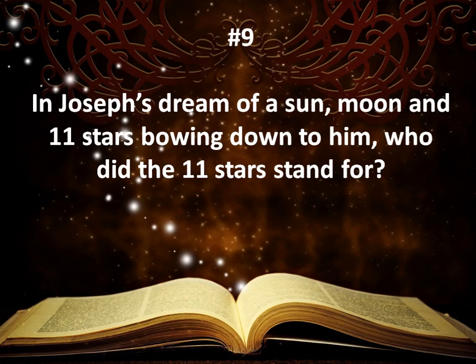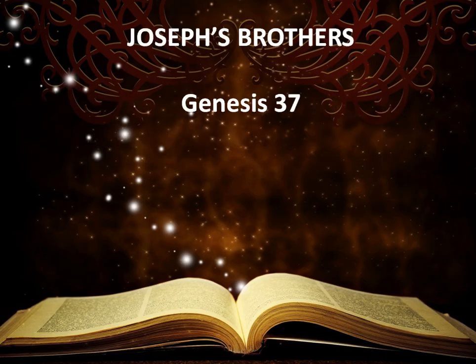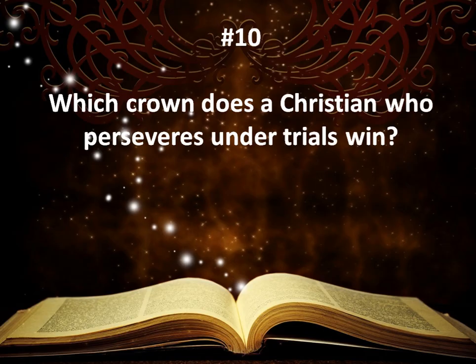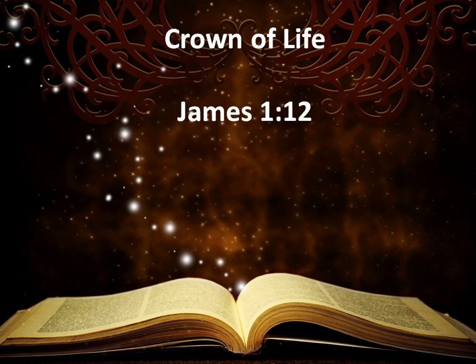Number nine: In Joseph's dream of a sun, moon, and eleven stars bowing down to him, who did the eleven stars stand for? The answer is his brothers, Genesis 37. Number ten: Which crown does a Christian who perseveres under trials win? The answer comes from James 1:12 — a crown of life.